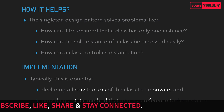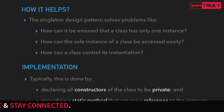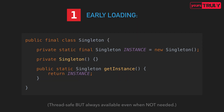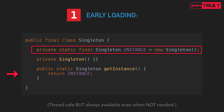Now let's look at how it is implemented — it's very easy. We declare all constructors of the class to be private, and we provide a static method that returns the reference to the instance created by the class itself. The first method is called early loading. Here we have a class called Singleton with a public static final Singleton instance initialized to a new Singleton. The constructor is made private, and a public static get instance method returns this instance loaded into memory.